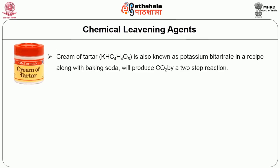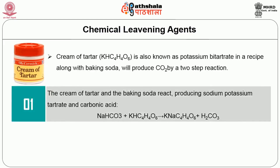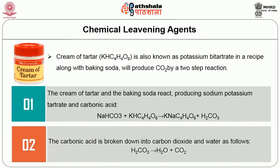Using cream of tartar, also known as potassium bitartrate, in a recipe along with baking soda will produce carbon dioxide by a two-step reaction. In the first step, the cream of tartar and baking soda react, producing sodium potassium tartrate and carbonic acid. In the second step, the carbonic acid is broken down into carbon dioxide and water.